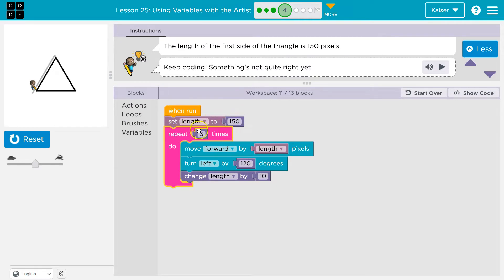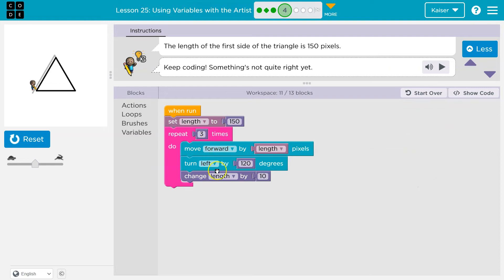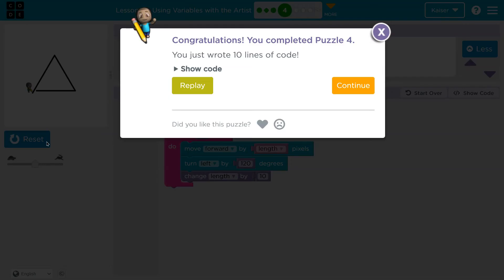We didn't want to have set three times, like we just saw. We only want to set the length once. It's not going to change. Then three times, we'll move forward, turn left, and change it. But we're not going to reset it. So set, we went above. It's kind of tricky, but we got it. Onward.